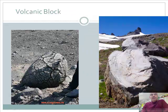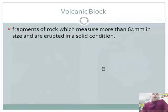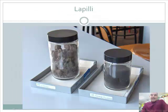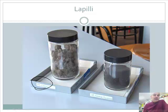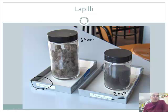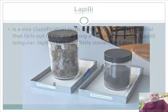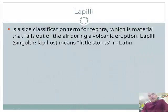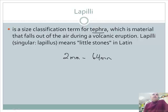Next, we've got lapilli — that's how you pronounce it. Lapilli are between 2 millimeters and 64 millimeters in size, so they're even smaller — kind of like tiny rocks or tiny bombs. It's a size classification term for tephra. The word comes from the Latin meaning 'little stones.' So the range is 2 millimeters to 64 millimeters.